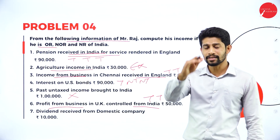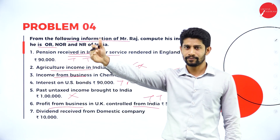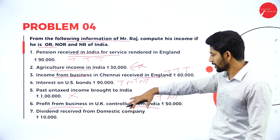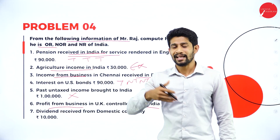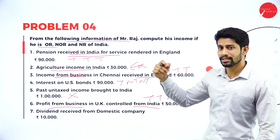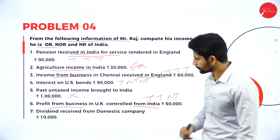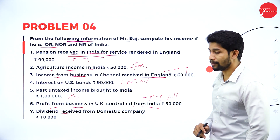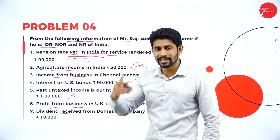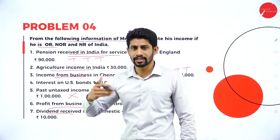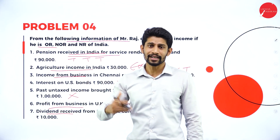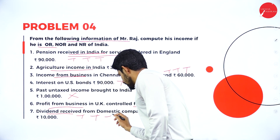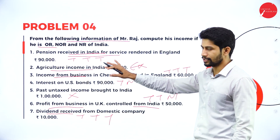The business is in a foreign country but controlled from India, so we tax it in the first two columns and put nil in the third column. Last: dividend received from a domestic company — domestic company is an Indian company, so income received in India. Treatment is taxable, taxable, taxable.